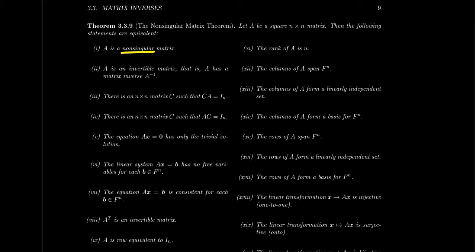Condition 5 says that if we look at the equation Ax equals 0 — our homogeneous system of linear equations — if this has only the trivial solution... because these systems are always consistent, you can always take x to be the zero vector, so we always have trivial solutions. But if the only solution to Ax equals 0 is the trivial solution for a square matrix, that's equivalent to being a non-singular matrix. The matrix inverse will exist, and we'll see in the next lecture why that is the case.